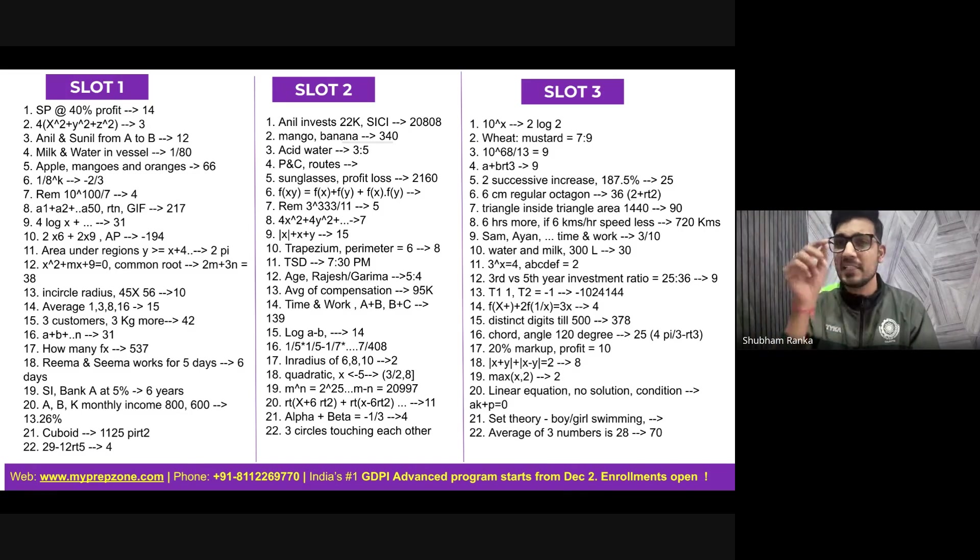Then there was an octagon. One of the side was 6 centimeters. Some area was asked. Triangle inside triangle. So it was happening 1/4 × 1/4 × 1/4. And the answer was 90. Again, a sitter. Then again a time-speed-distance question. Had the time taken by a particular person been 6 hours more, then speed would have been this less. Find the total distance. 720 kilometers. If you have any particular question, if you're not able to recall anything guys, feel free to ask it in the comment section. I'll be happy to revisit and help you recall what the exact question was.